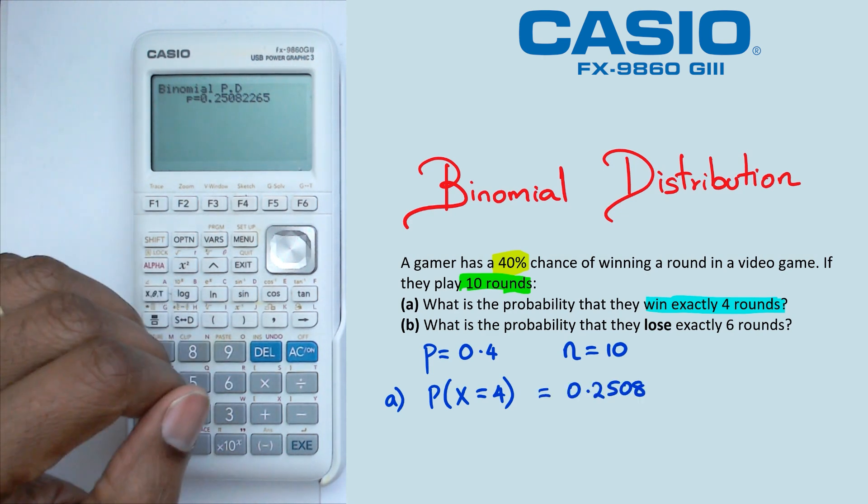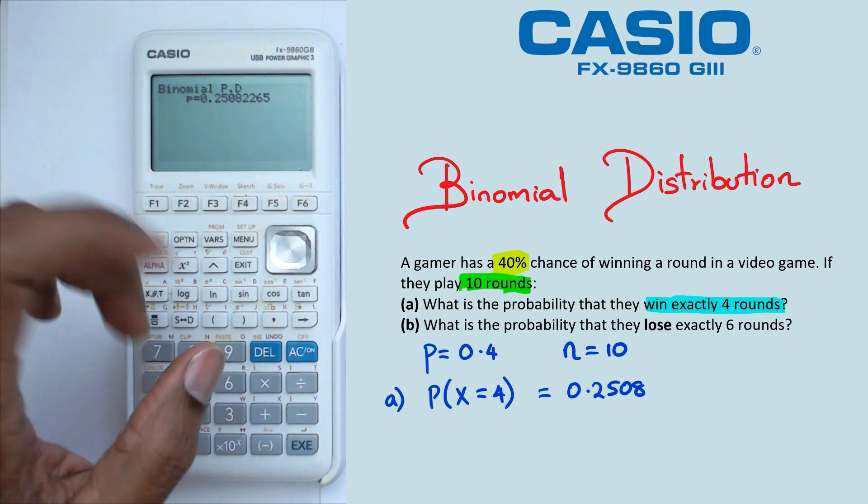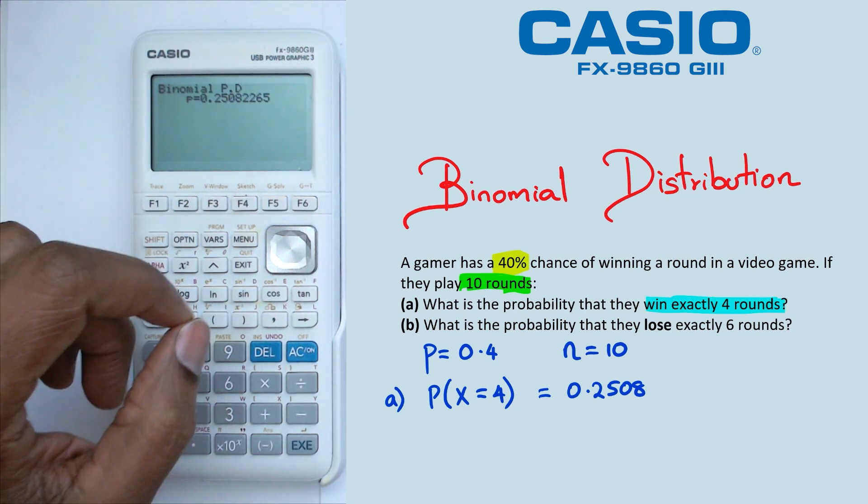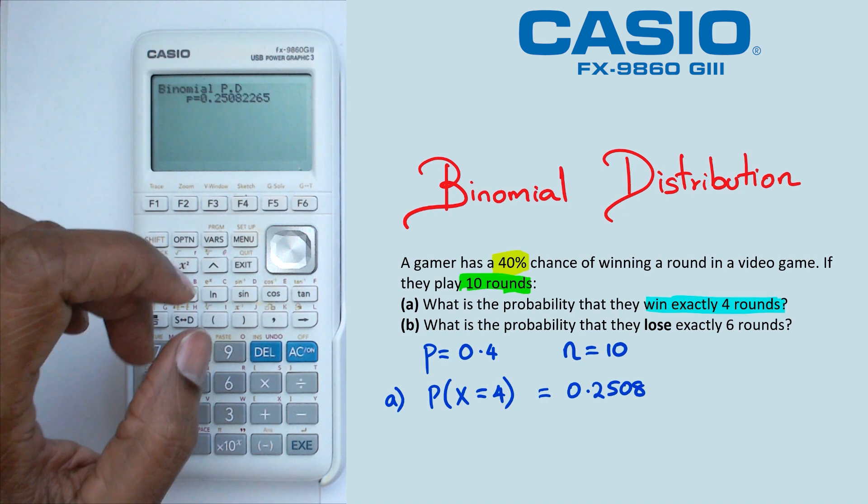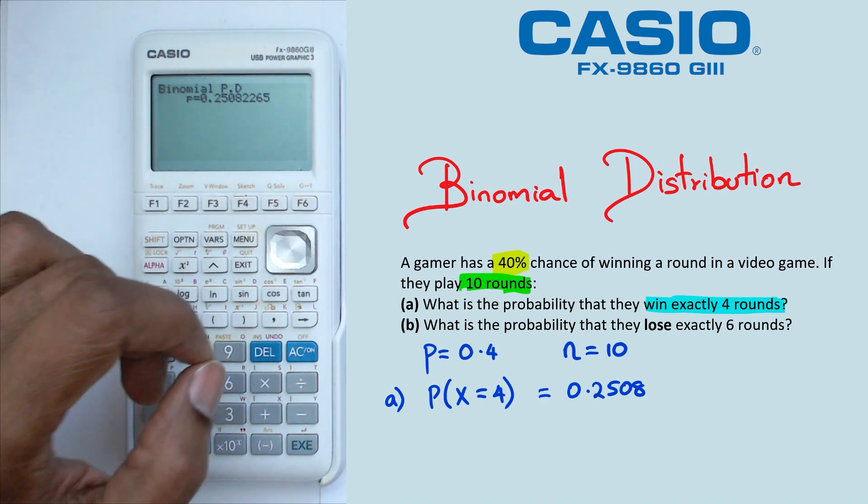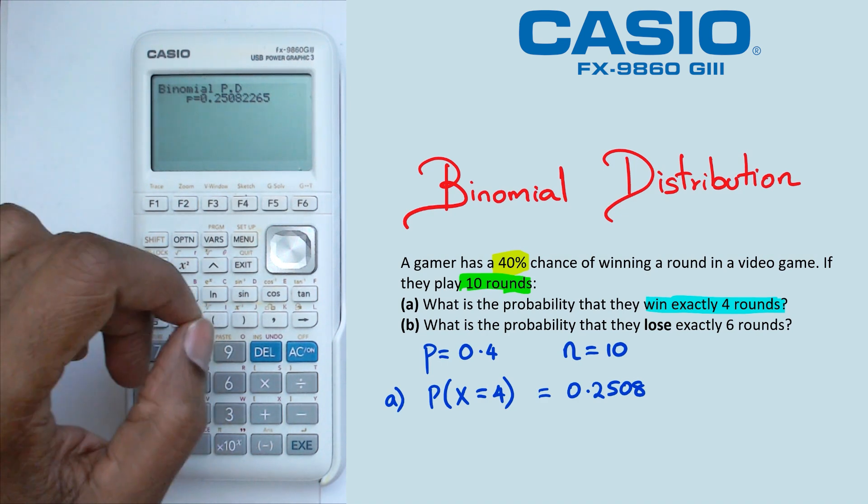Now, once again, with the binomial distribution, I'm going to leave the probability in four decimal places. Now looking at question B, if they win exactly four rounds, that means they've actually lost six rounds. So the probability for question B should be the same for us.